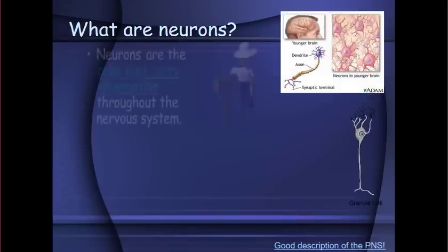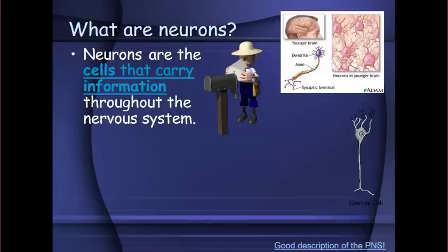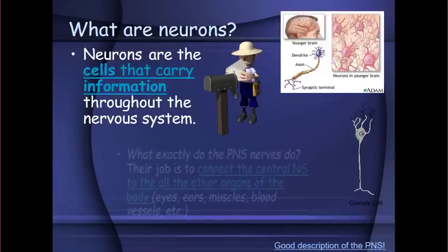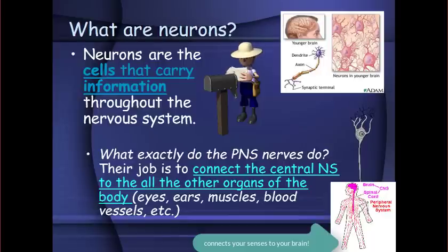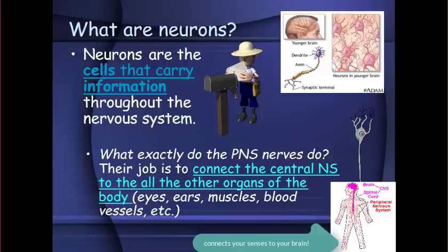What are neurons? Neurons are the cells that carry information throughout your nervous system. The job of the peripheral nervous system neurons is to connect the central nervous system to all the other organs of the body — your eyes, ears, muscles, and blood vessels — so that information can travel between them and the brain and spinal cord.